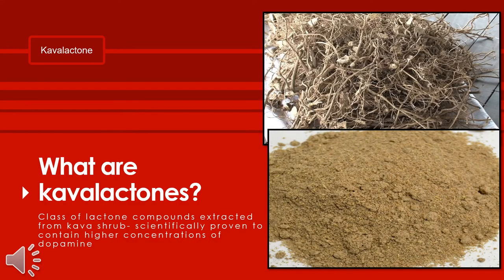Now that we know what dopamine is, I will introduce the dopamine resource I used in this research. I used kava lactones derived from the kava plant. Kava is a plant grown mainly in the South Pacific Islands, used mainly as a traditional drink or for herbal and medicinal purposes. Kava lactones is a class of lactone compounds extracted from the kava shrub, and it is scientifically proven to contain higher concentrations of dopamine, which is why it is my dopamine resource.